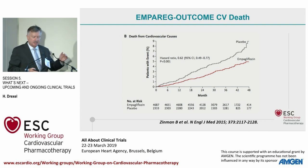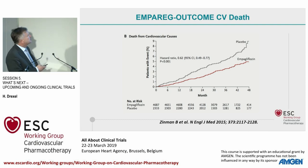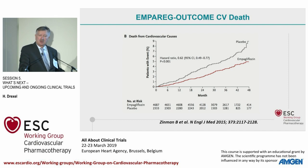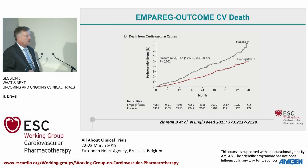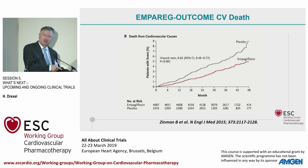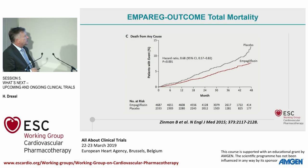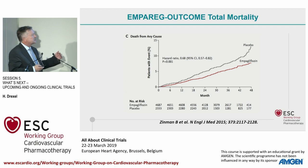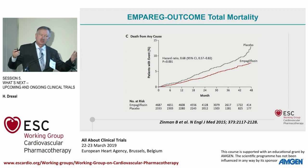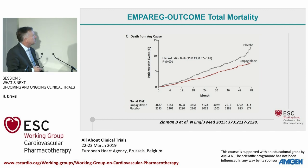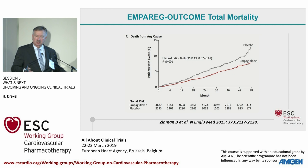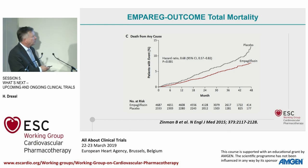Even more important was the mortality reduction. Cardiovascular mortality was reduced at a relative risk of 0.62 — meaning one out of three cardiovascular deaths is prevented compared to the best currently treated diabetes patients. Total mortality was also excellent: a 32% reduction in total mortality over just four years. This is the hallmark of the new trials in diabetes.